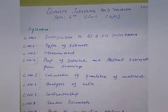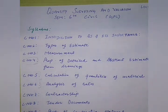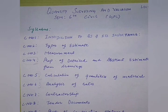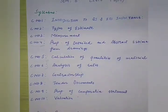Then we will talk about the calculation of quantities of material — how we calculate cement, fine aggregate, coarse aggregate, and so on. After that, we will go for the analysis of rates, where we will see how a complete analysis of an estimate is done. Then we have the theory portion: contractorship, document preparation, and the comparative statement. Finally, we will cover evaluation.